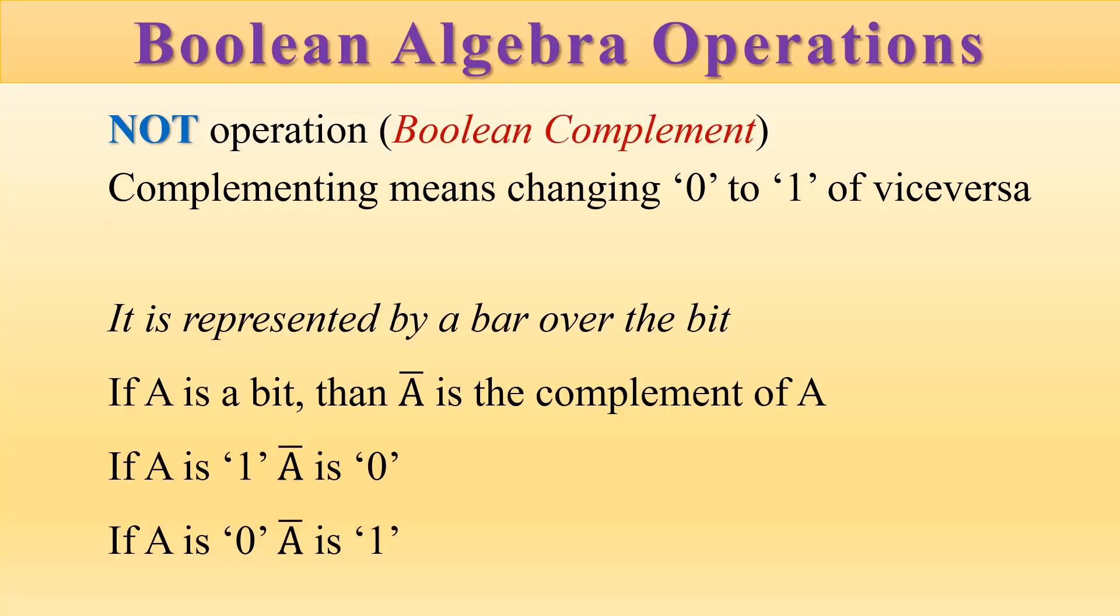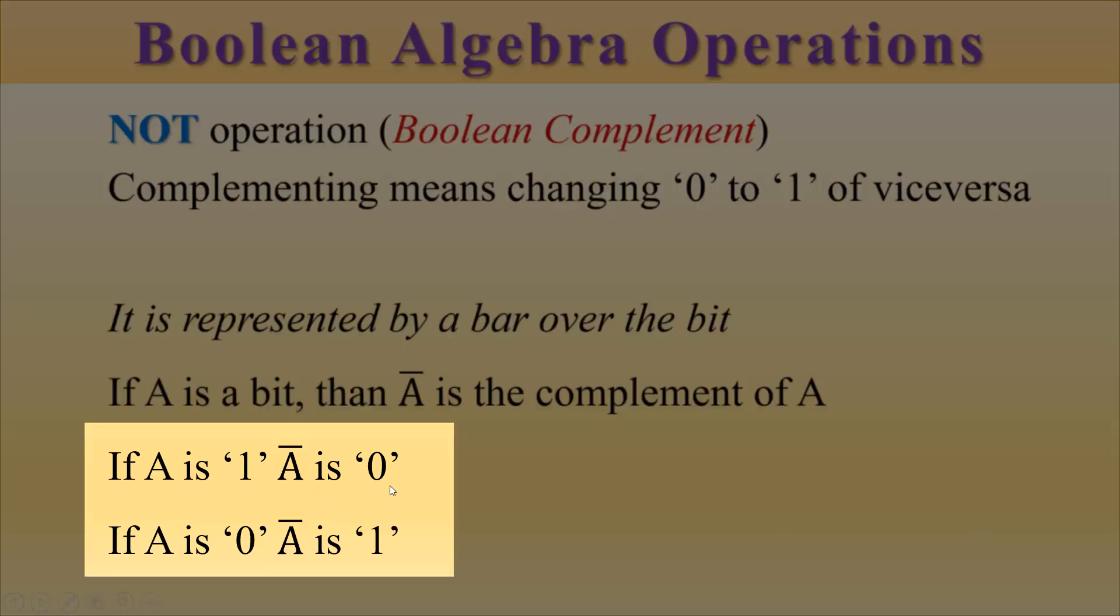If the bit A is 1, then the complement of A, written as A bar, is 0. So if A is 1, then A bar is 0. If A is 0, then A bar is 1.